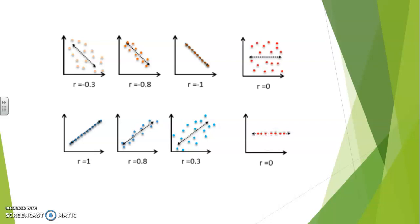Here are two situations where the coefficient of correlation would be zero. In the first case, the scatter plot appears completely arbitrary — there is no alignment and no apparent trend. In the second case, all the points are perfectly lined up but there is no change in height, meaning that variations in x will not cause the values of y to change. In other words, y is independent of x.